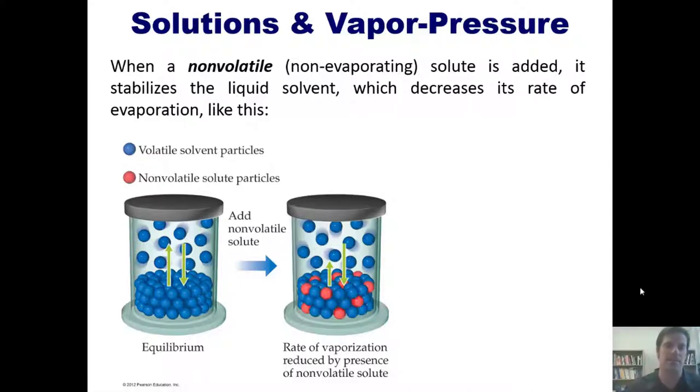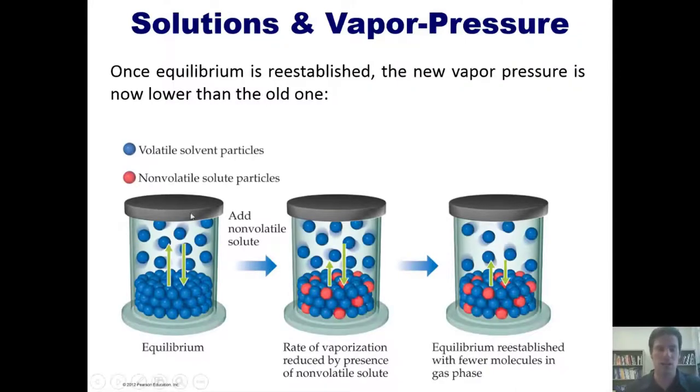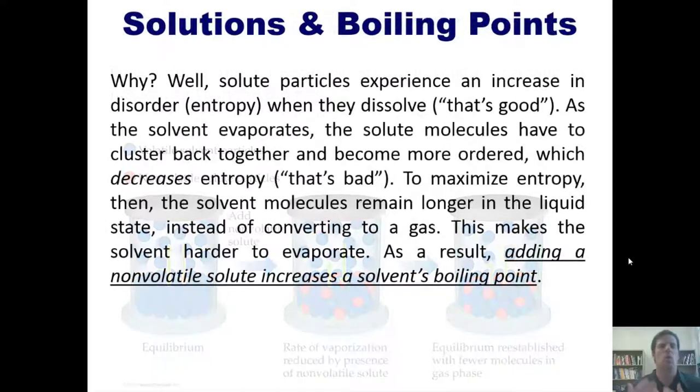Once equilibrium is established, the new vapor pressure is now lower than the old one. We can see that shown in this figure here. Once again, I've got my volatile solvent evaporating and condensing back and forth in equilibrium. I add a solute that is not volatile, it decreases the rate of back and forth until we reach a new equilibrium. You're welcome to pause the video here and look at this figure closely until you've wrapped your head around the concept.